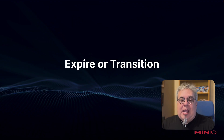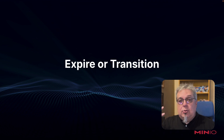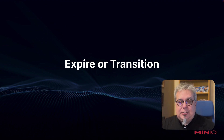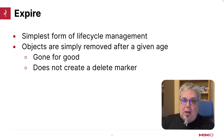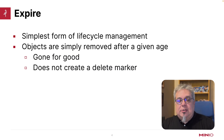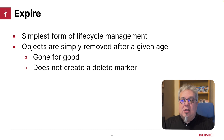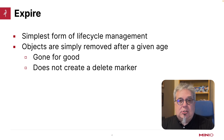The first question you have to ask yourself is: am I going to expire these objects, or am I going to transition these objects? There are some implications for both. Let's talk about expire first. When we're doing expire, this is really the simplest form of lifecycle management that you can have. The objects are basically removed once they reach a certain age.